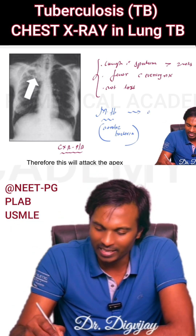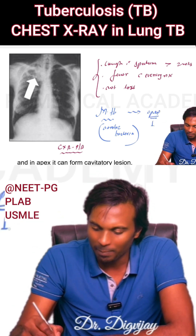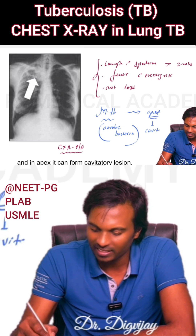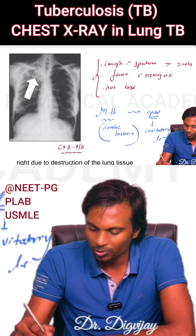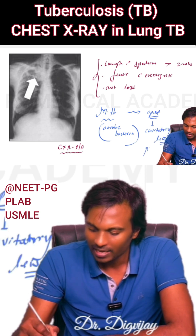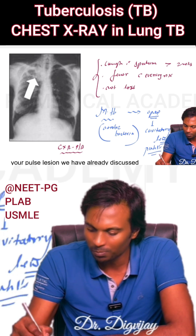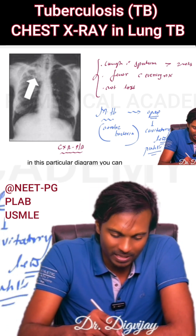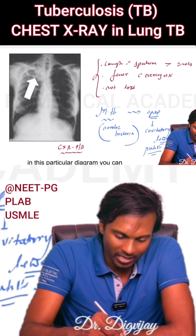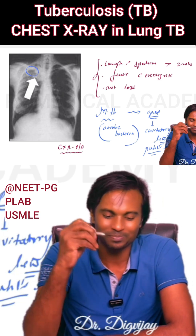Therefore, it will attack the apex. And in the apex, it can form a cavitary lesion due to destruction of the lung tissue. This particular structure is known as the Ghon's lesion, as we have already discussed. In this diagram, you can appreciate the presence of a cavity.